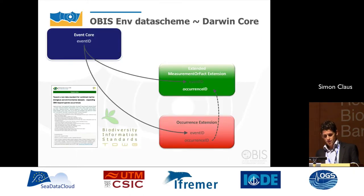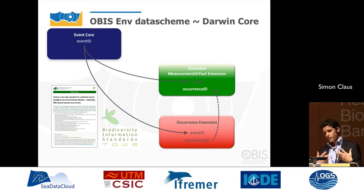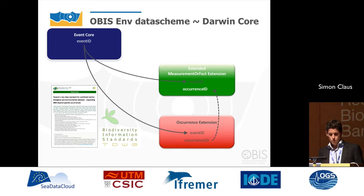We used to work with the occurrence scheme only, but we've moved toward a new data scheme — the OBIS ENV data scheme, developed together with IODE. It is event-based: you have an event such as a sample, which can have a subsample. To that event you can add specific measurements taken at the event, or specific occurrences — species found at the event — and you can also add measurements to an occurrence, for example if the species found was also measured. It's a flexible format for storing biological observations and linked environmental parameters.